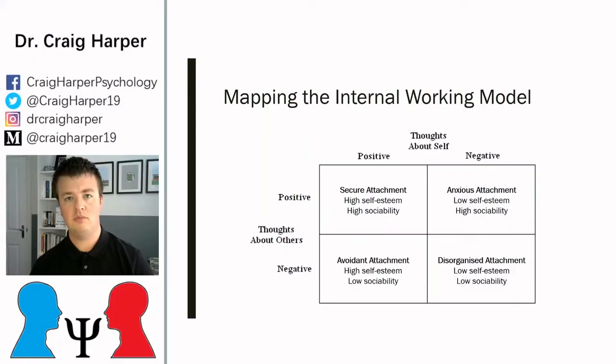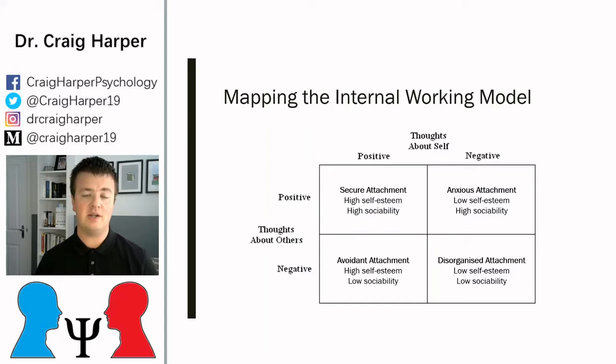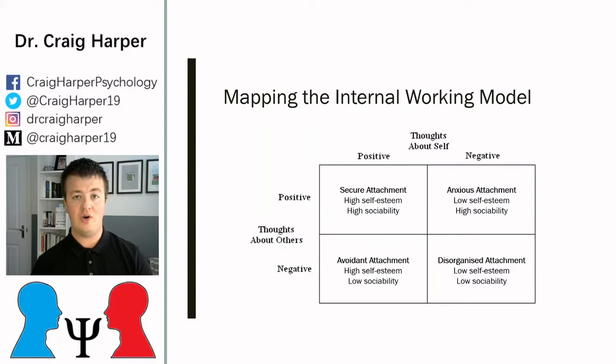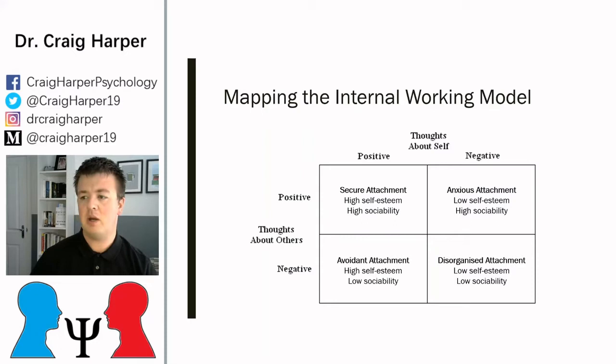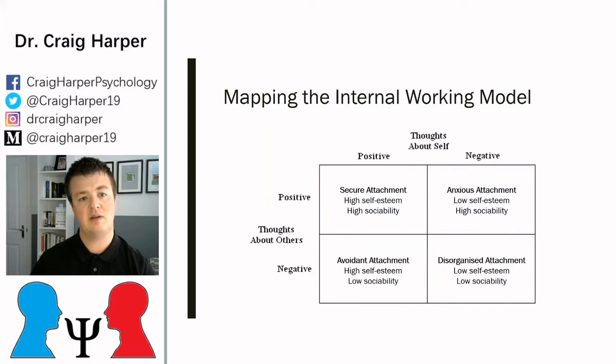The internal working model is the really key concept in this video. The idea is that how we view ourselves and others within the context of the social environment is broken down into a two-by-two matrix. One dimension is how we view ourselves — positive or negative — and the other is how we view other people — positive or negative, or threatening versus helpful. People who are securely attached tend to see themselves quite positively and also see other people in a positive light, so if they experience issues they can rely on others to help them.